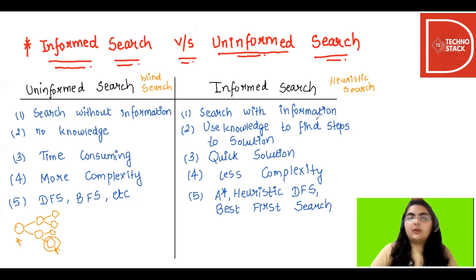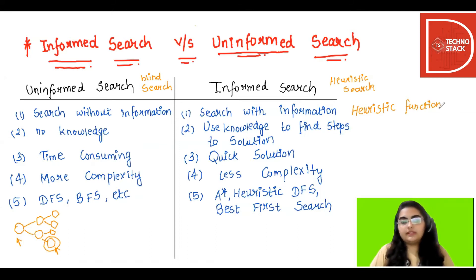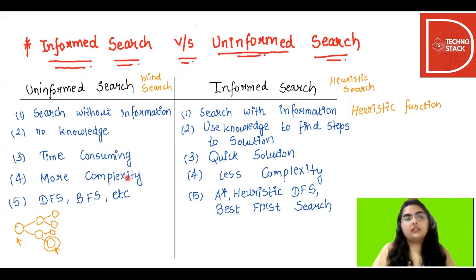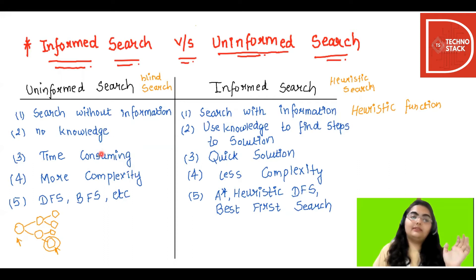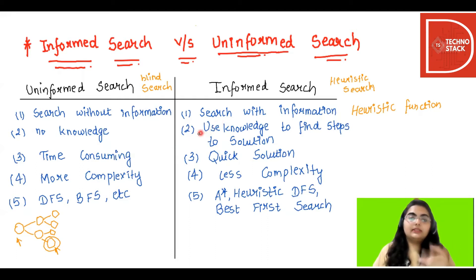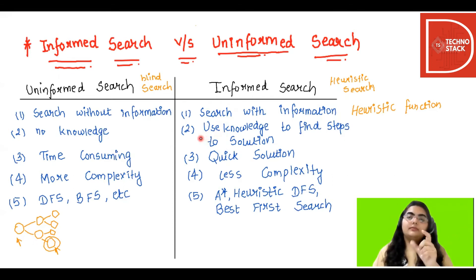In informed search, we use heuristic functions for information to search for the goal state. In uninformed search we don't have prior knowledge of which path to consider, whereas in informed search we know which path and how many steps are needed to reach from the start state to the goal state — and this is achieved by using heuristics.